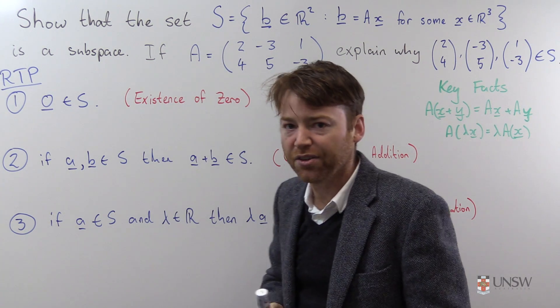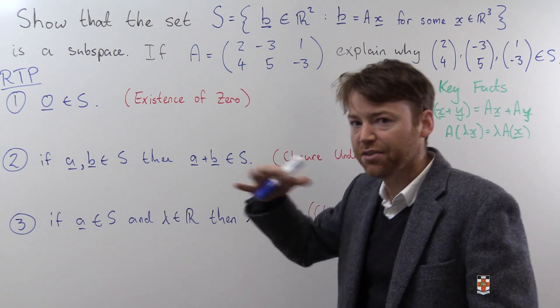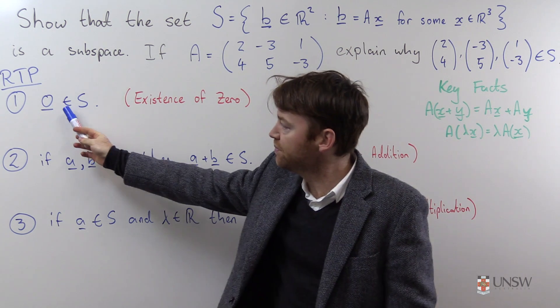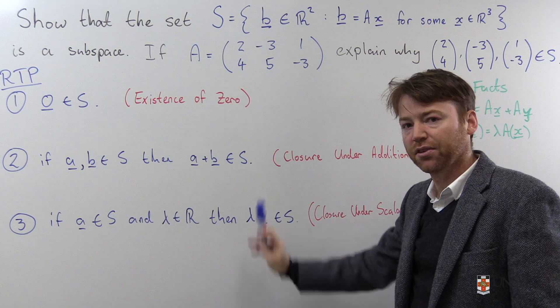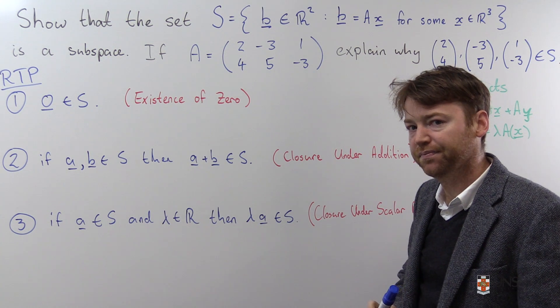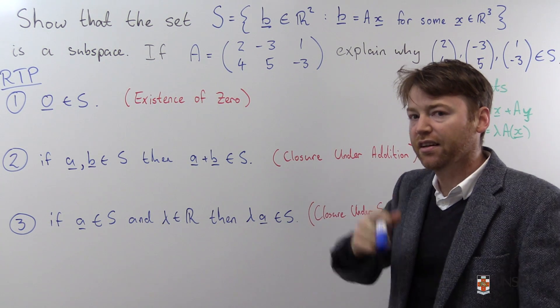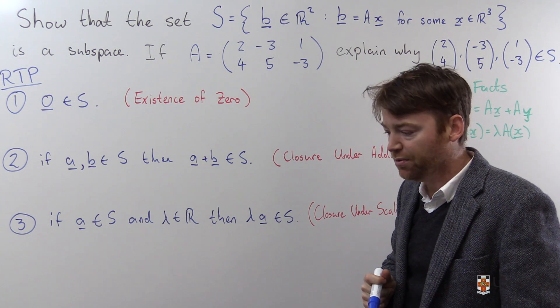The only things that are not inherited automatically from the larger vector space are the existence of 0, closure under addition, and closure under scalar multiplication.